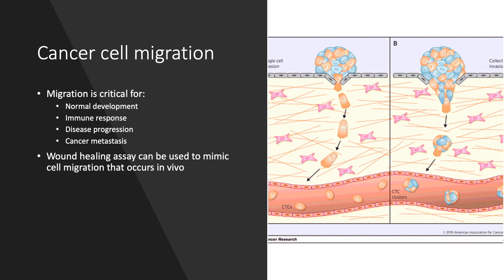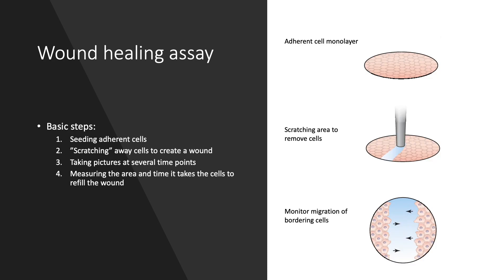The basic steps involve creating a wound in a confluent monolayer of adherent cells by scratching away an area of the monolayer using a micropipette tip. This leaves a gap between two areas of cells, which will act as our wound. We can then measure cell migration based on the area of the wound that the bordering cells refill and the time it takes for the cells to refill the area.